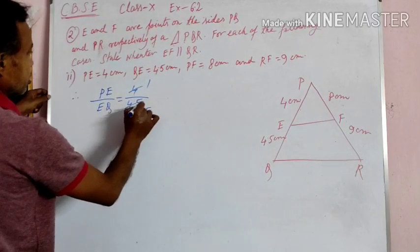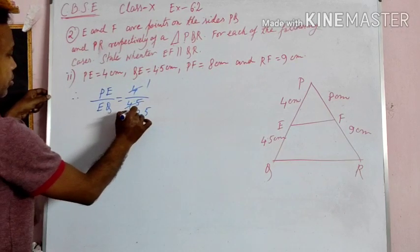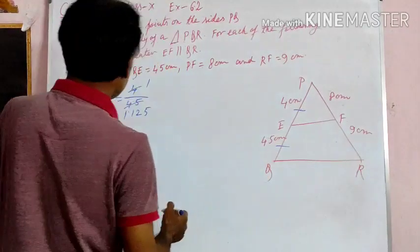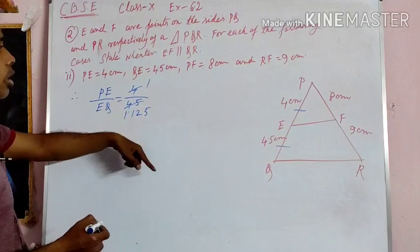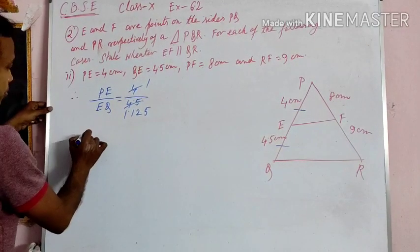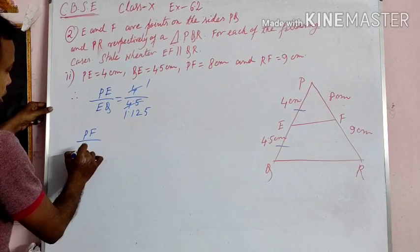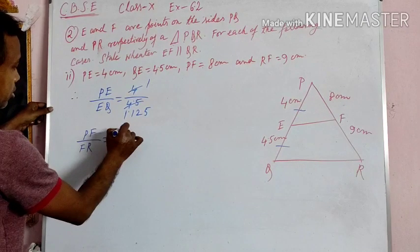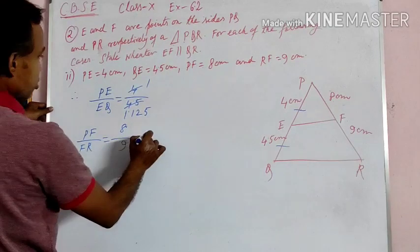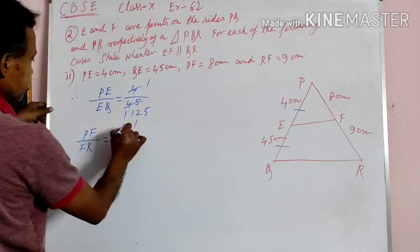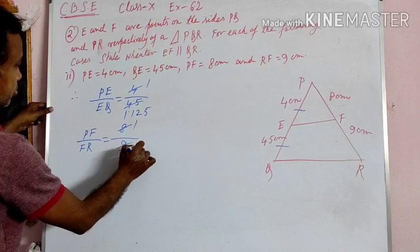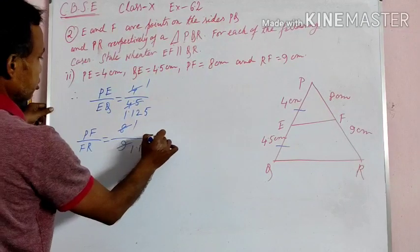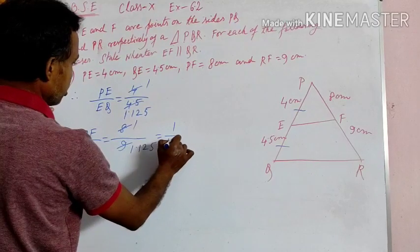Cancelling, PE by EQ equals approximately 0.889, that is 1 by 1.125. Now check PF by FR equals 8 by 9, which is also equal to 1 by 1.125.